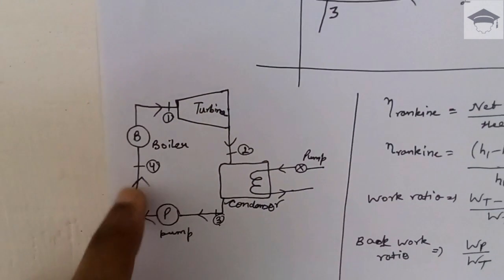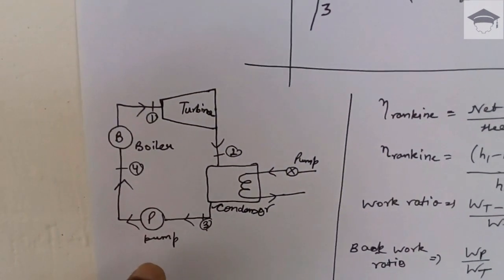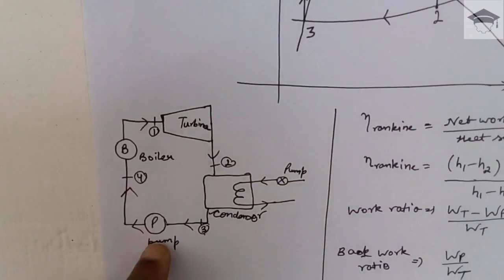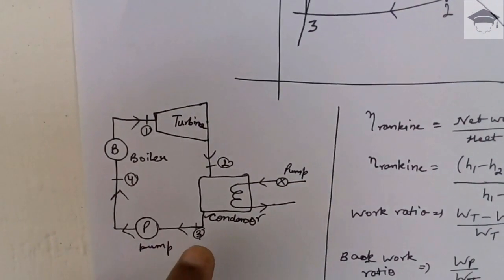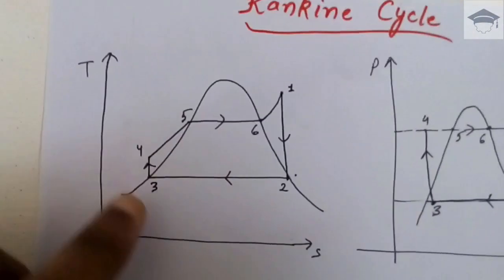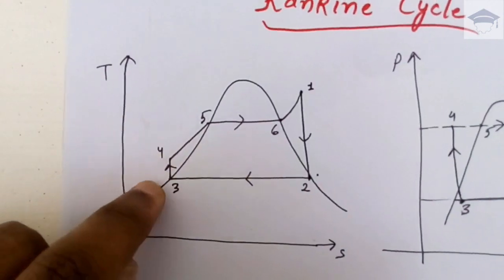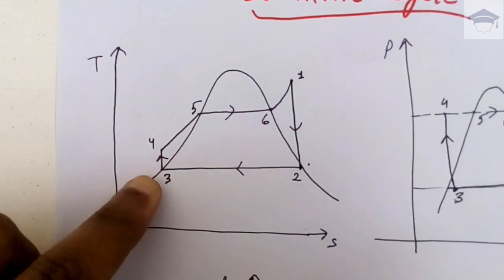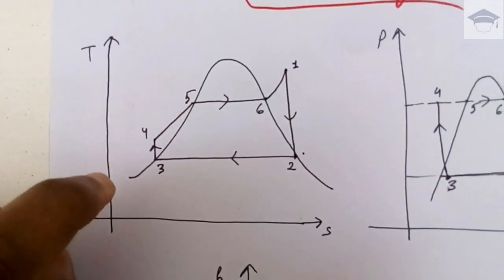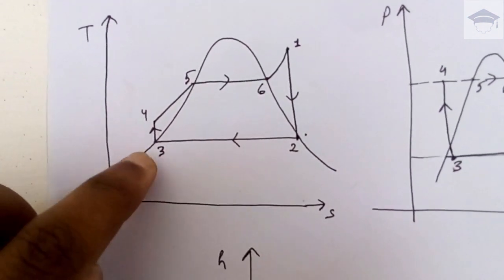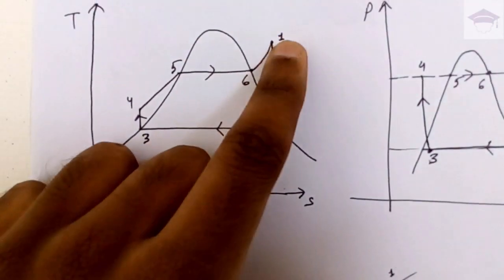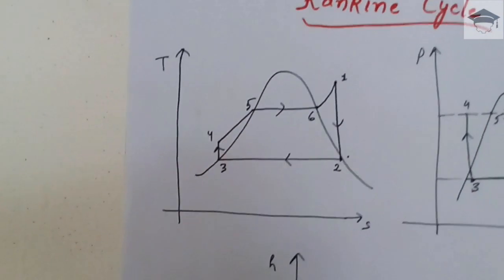The process from three to four in the pump is reversible adiabatic. From four to one, we have to supply heat at constant pressure in the boiler.